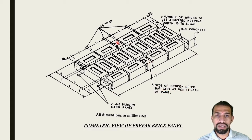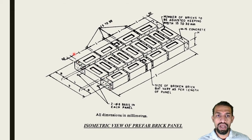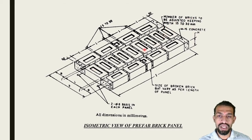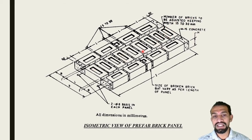The joint is provided in terms of an opening. The mortar or concrete filling in between varies from 15 mm to 30 mm, and at the edge, the concrete holding the reinforcement has a minimum of 50 mm. The number of bricks is to be adjusted keeping the width as 15 to 30 mm, and how many can be accommodated can be seen in this particular figure.